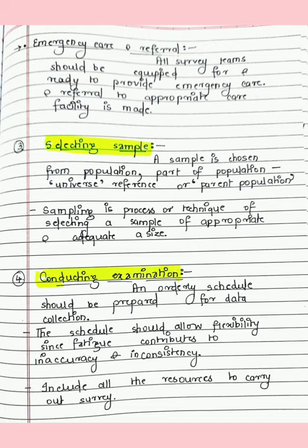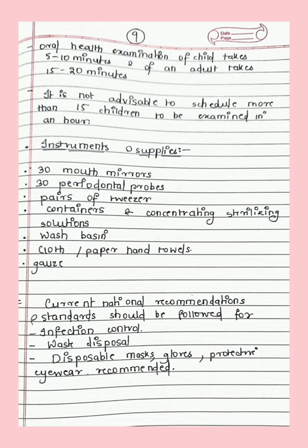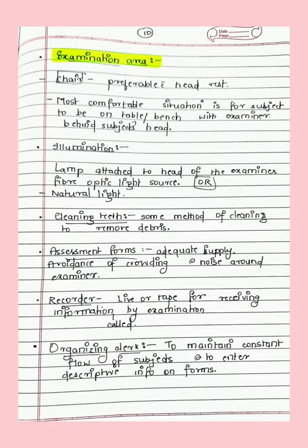For conducting examination, prepare a schedule and examine patients accordingly. The schedule should be flexible to avoid fatigue, as examiner fatigue contributes to inaccuracy and inconsistency. Oral examination of a child should not take more than 5–10 minutes; of an adult, 15–20 minutes. It is advisable not to schedule more than 15 children per hour. Required instruments include mouth mirrors, probes, tweezers, cotton containers, sterilizing solutions, cloth, paper, and disposable masks, gloves, and protective eyewear.